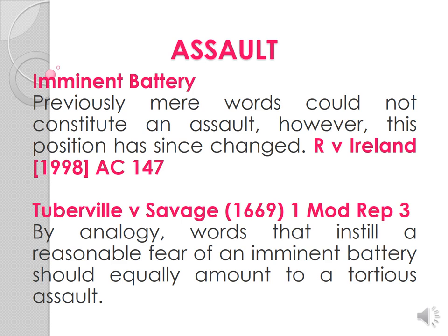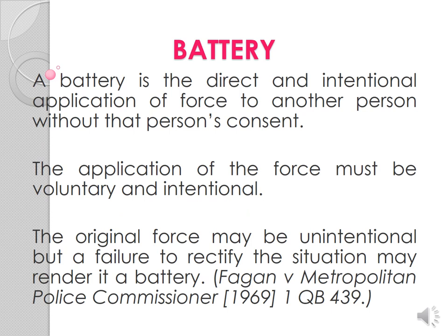To bring it together: if one strikes another upon the hand or arm in conversation, it is not an assault since there is no intention to assault. But if a person with the intention to assault strikes at another and misses, that is an assault. Or if he holds up his hand in a threatening manner but says nothing, it is still an assault. The important thing to note is that the intention as well as the act makes the assault.